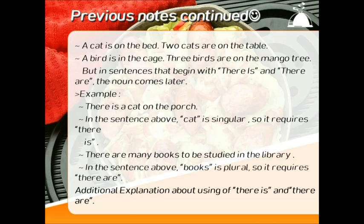Example: there is a cat on the porch. In that sentence, 'cat' is singular, so it requires 'there is'. There are many books to be studied in the library. In that sentence, 'books' is plural, so it requires 'there are'.